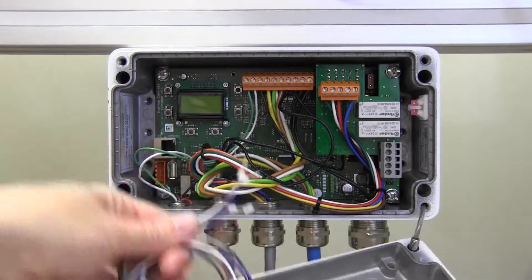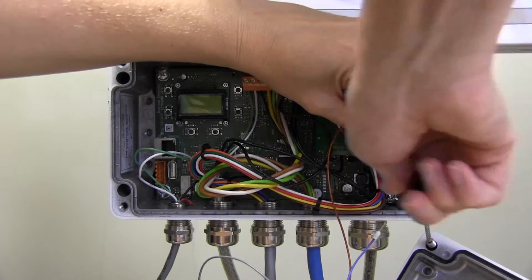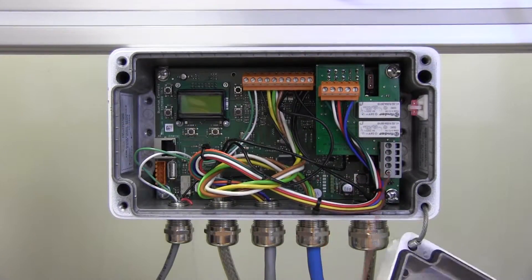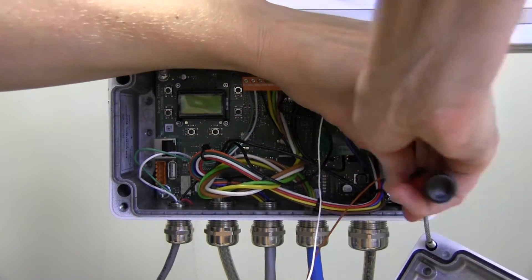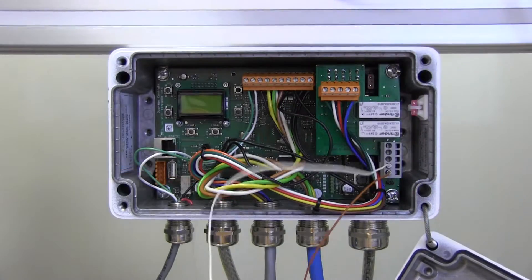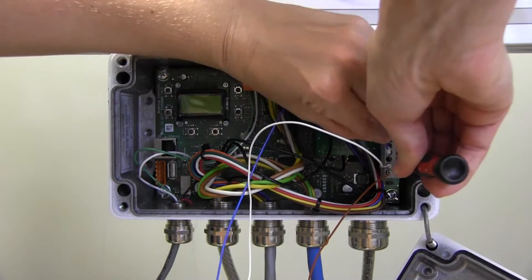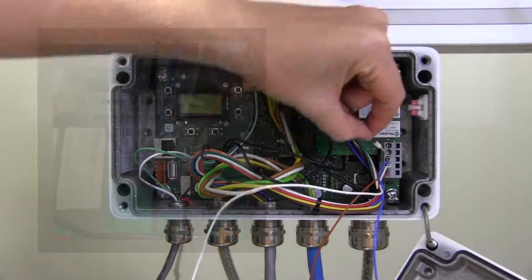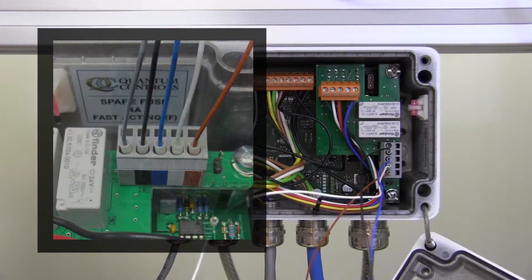Finally, it's time to make the final connections. Using the 3mm or 5/32 inch flat head screwdriver, insert the M12 connector cable wires into the X3 connector on the interface board following the color code provided.